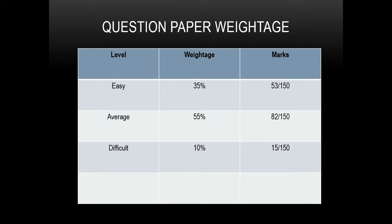PU Board Question Paper will be for 150 marks, including choices. Question paper can be categorized into three levels, where the level of difficulty will be 10%. Average level questions can be expected for 55%, which carries 82 marks out of 150. Every PU Board Paper will have a set of 35% easy level questions too.